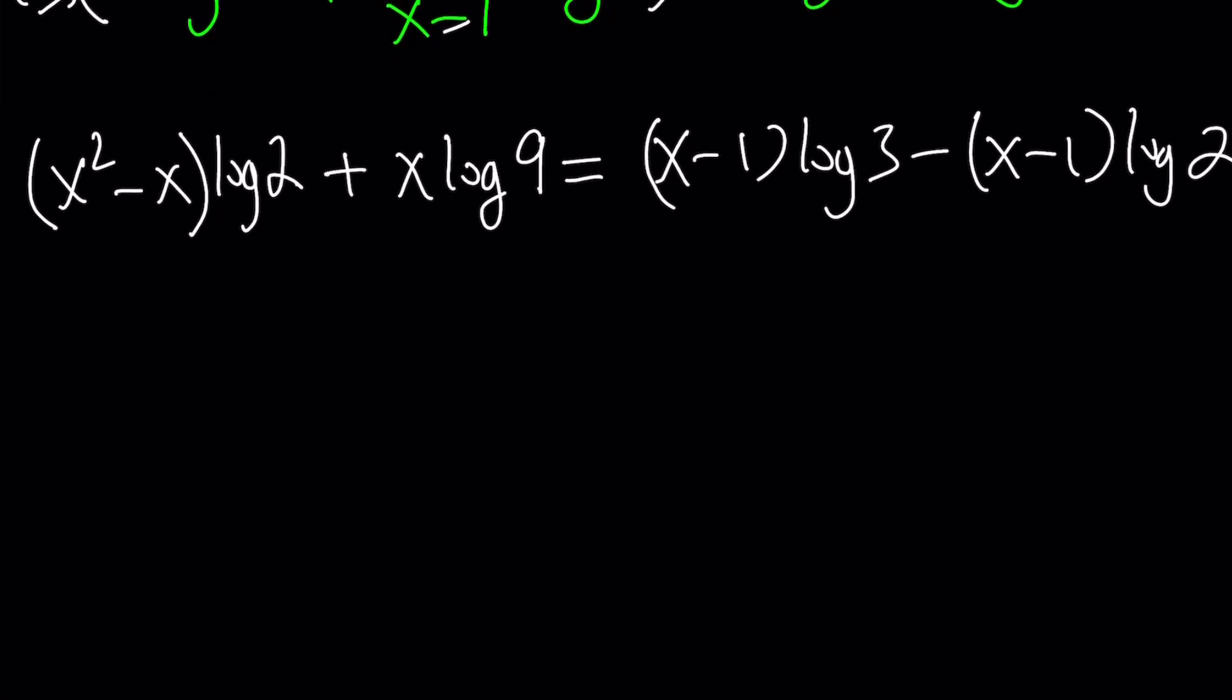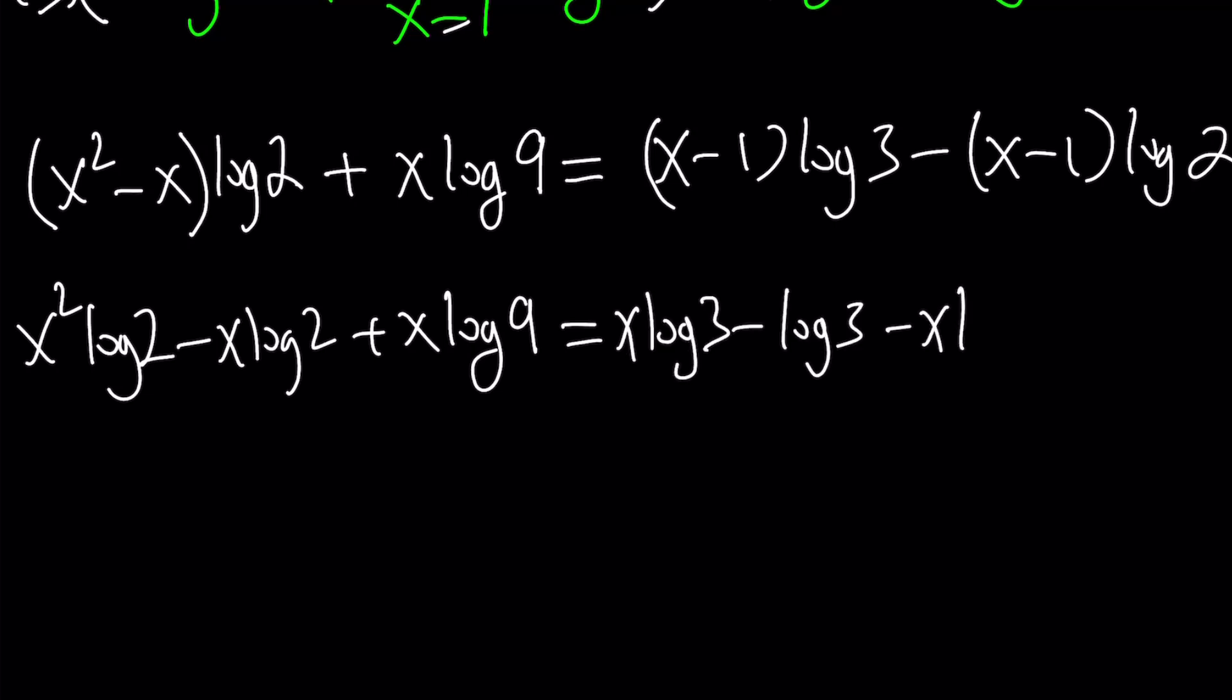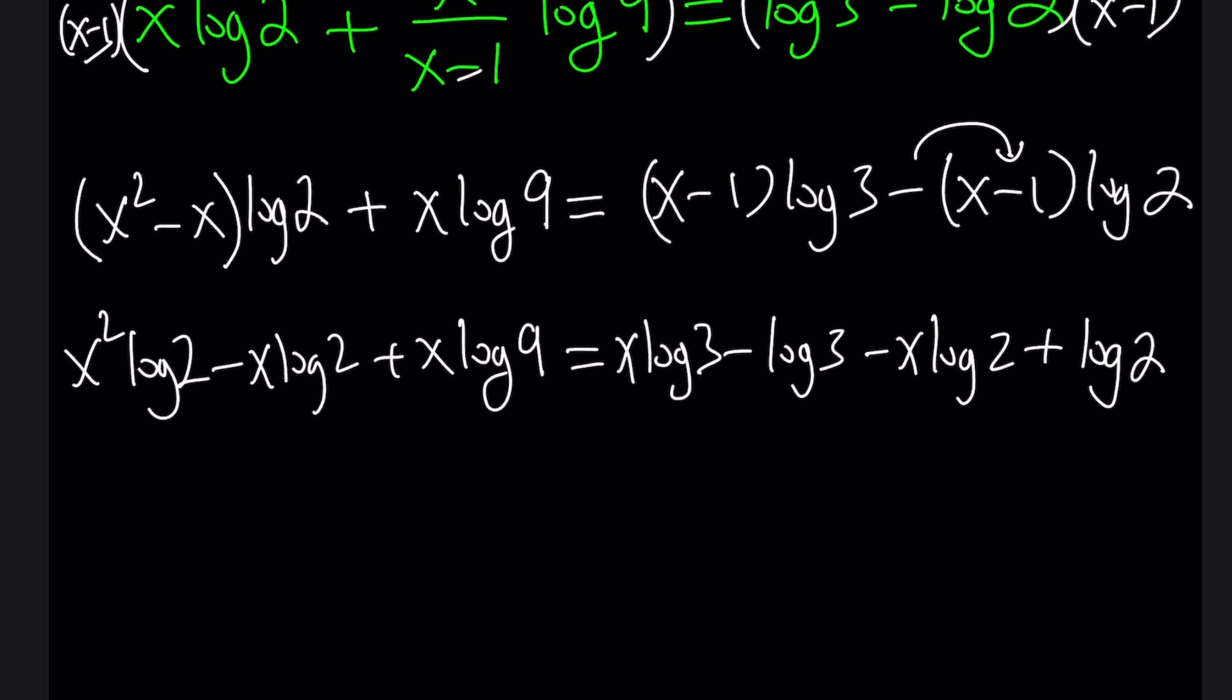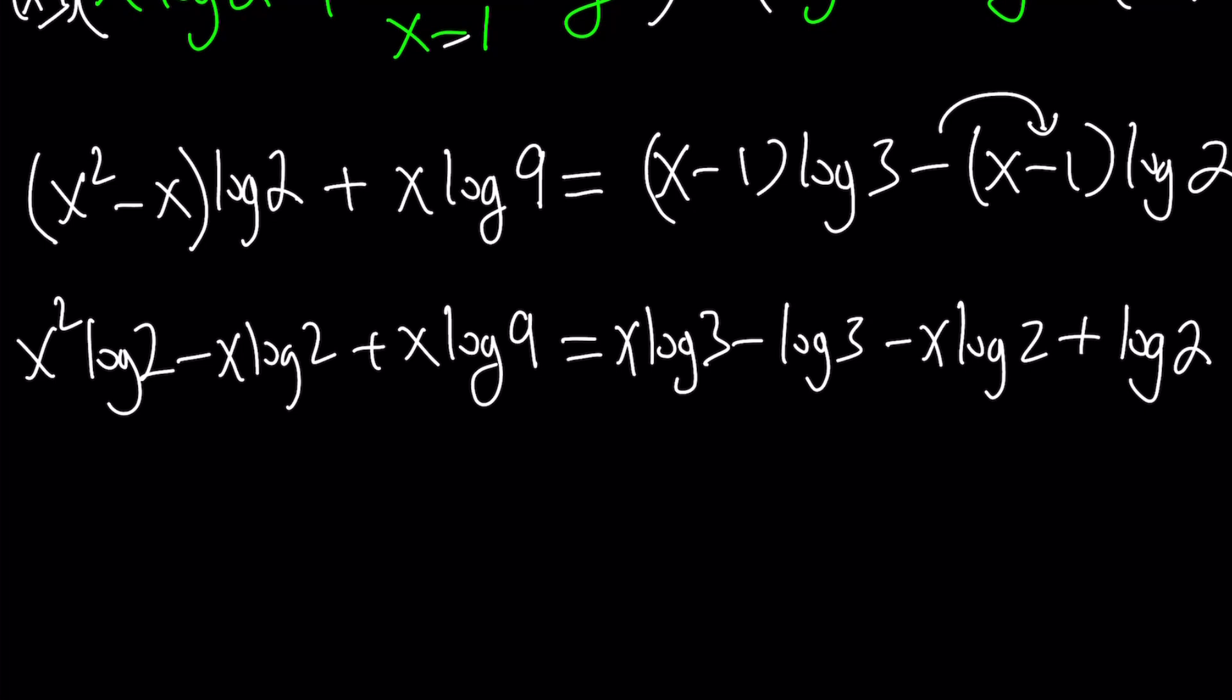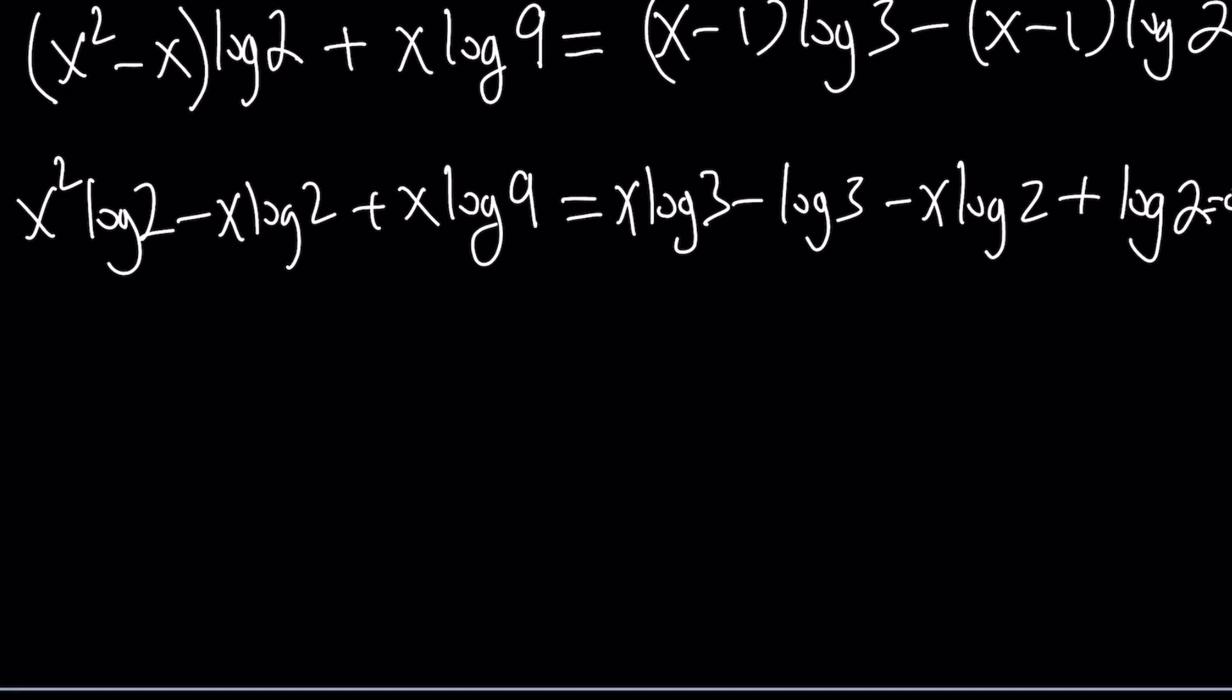And now we can go ahead and split it all up like x squared log 2 minus x log 2 plus x log 9. Let's spread out everything and then we'll take care of it. And then x log 3 minus log 3 minus x log 2 plus careful here. It's kind of like double negative. And that is going to be positive or plus log 2. And the whole thing is equal to 0 obviously.